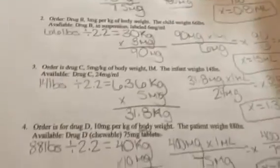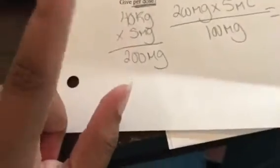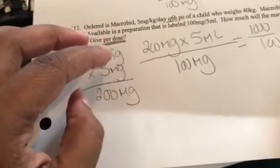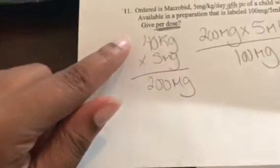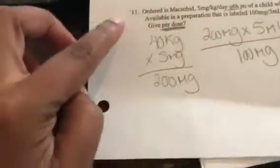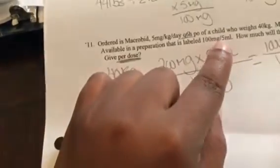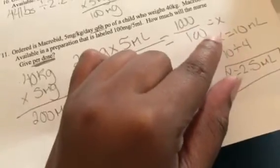I want to go over one that says per dose. Let's look at this one right here because this one is a little different. 5 milligrams per kilogram a day, every 6 hours. This problem already gave you the information, already converted into kilograms, so we didn't have to divide by 2.2. 40 kilograms times 5 because that's the order gives you 200 milligrams. 200 milligrams times 5 because this is the available, 5 milliliters over 100, so that's 1000 over 100, so that's going to be 10.